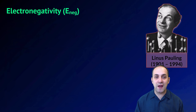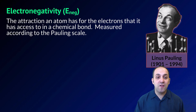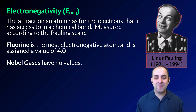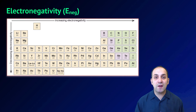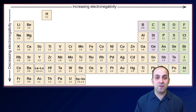Our next trend is electronegativity — defined as the attraction an atom has for the electrons it has access to in a chemical bond, meaning its bonded electrons. This is measured according to the Pauling scale, developed by Linus Pauling. Fluorine has the strongest attraction for bonded electrons and is assigned an electronegativity value of 4.0, and all other elements go down from there. Noble gases generally have no electronegativity values because they generally do not bond. This periodic table shows electronegativity values, and you can see that in a period, as atomic number increases, so does electronegativity, while in a group, as atomic number increases, electronegativity decreases.